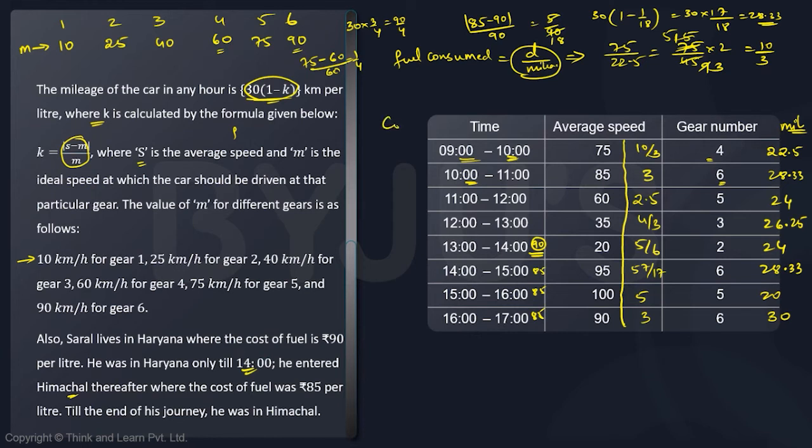Once you get the fuel consumed, you can find the cost. Cost is number of liters times 90. So 10/3 into 90 is 300, then for the second one 90 into 3 is 270, then the next one will be 225. Similarly, the next one will be 120 and the next one will be 75, but now remember the fuel cost is 85. So it is 85 × 57/17 which is 285, and the remaining two will be 445 and 255. So this is the entire structure for you. Now let us take a look at the questions.